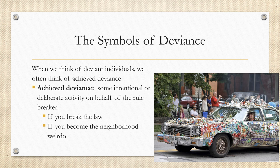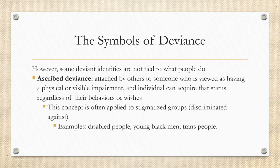When we think of deviant individuals, we often think of what is called achieved deviance, defined as intentional or deliberate activity on behalf of the rule breaker. So if you break the law, that's achieved deviance. If you become the neighborhood weirdo because of how you behave — and remember, deviance isn't necessarily crime — that also is achieved deviance. However, some deviant identities are not tied to what people actually do. This is called ascribed deviance: it is attached by others to someone viewed as having a physical or visible impairment, and the individual can acquire that status regardless of their behaviors or their wishes.